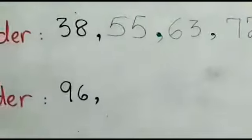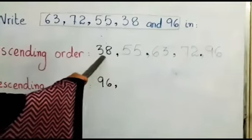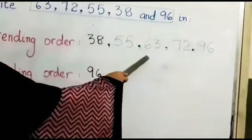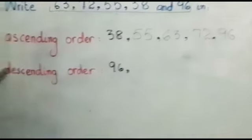So my dear students, the numbers in ascending order are 38, 55, 63, 72 and 96. Now come to part B, descending order.